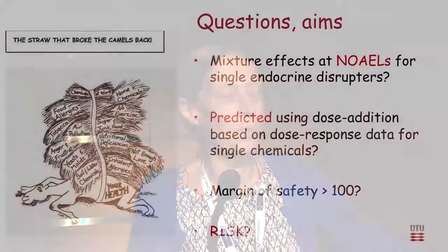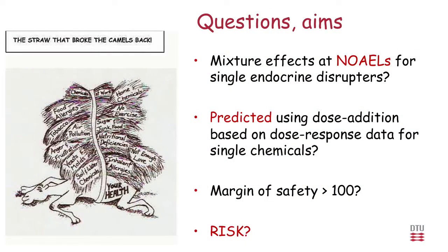We decided to do research to answer the following questions: Is there a mixture effect at the NOAELs for single endocrine disruptors? Can this mixture effect be predicted using dose addition — a model based on dose-response data for single chemicals? That would be very useful because it's impossible to test every kind of mixture in animal models. And is there actually a margin of safety of 100 when we look at human exposure levels — could there be a risk for the human population based on experimental studies?